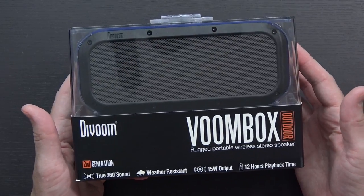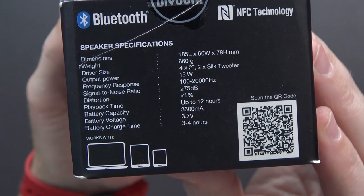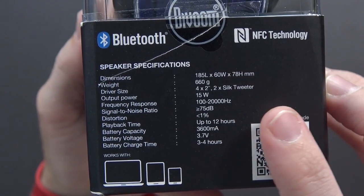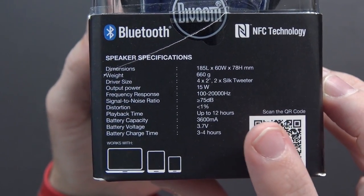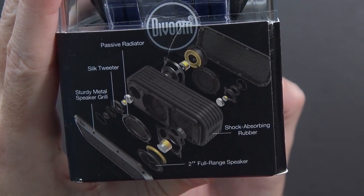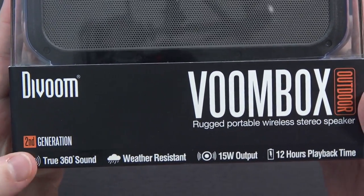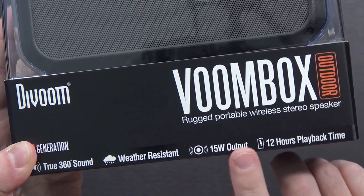I'm gonna go ahead and start things off by looking at the Vooom box because I figure it'll be more straightforward. And it's actually packaged. The other one did not come packaged, so I'm guessing I got a pre-release version of it. Here's some of the speaker specifications there on the side. It has 15 watt output. There's a signal-to-noise ratio. It says you can play back for up to 12 hours and it charges in about three to four hours.